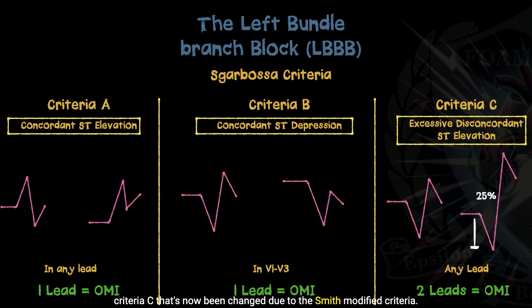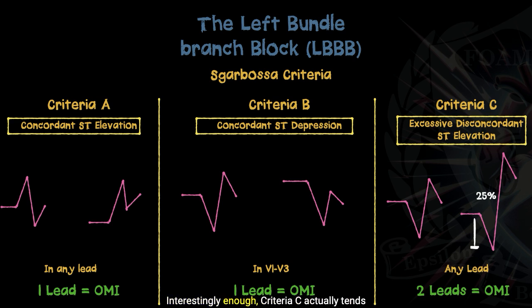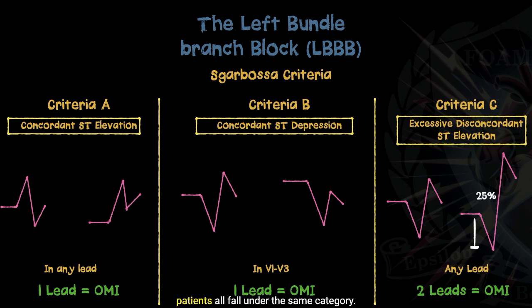That's now been changed due to the Smith modified criteria. They've now applied a 25% rule — if the ST segment elevation is 25% of the preceding R wave or depth of the QRS complex, that's positive for criteria C. Interestingly, criteria C actually tends to be very sensitive for pacemaker patients. Left bundle branch blocks and pacemaker patients all fall under the same category.